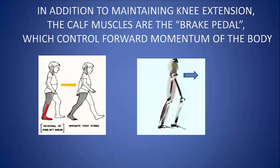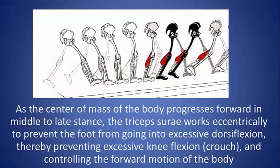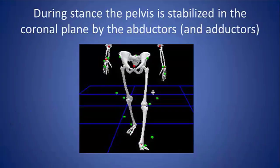In addition to maintaining knee extension, the calf muscles also act as a kind of brake pedal, controlling the forward momentum of the body and keeping velocity throughout the entire gait process relatively steady rather than fluctuating quicker and slower. In summary, the gastroc-soleus is one of the most critical muscles to gait. The gluteus maximus and hamstrings power the gait, but the gastroc-soleus controls the body during forward motion in stance phase. The triceps surae works eccentrically both to prevent excessive dorsiflexion — thereby preventing excessive knee flexion — and to control the forward motion of the body and keep it smooth.